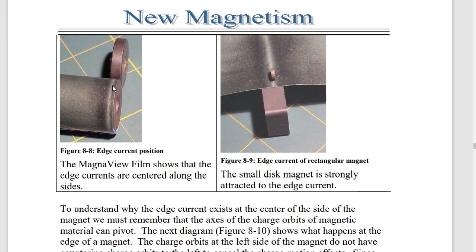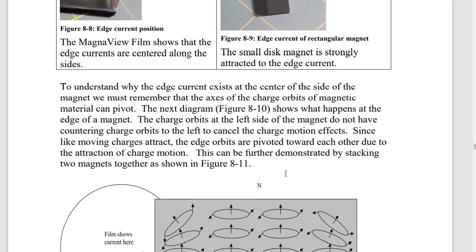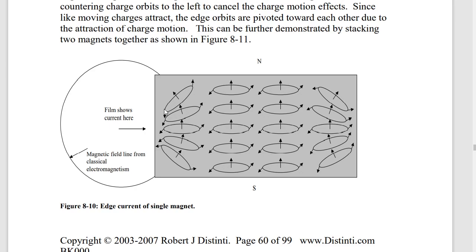If we put the MagnetView film along the side of the magnet, we see that the current ring is actually along the center of the magnet. Using a large rectangular magnet, we can see that the current ring goes around the center, and a little disc magnet is attracted right to that center current. If you model the current as halfway across the center of the magnet, you'll get very good results — you can compute the field from a rectangular magnet at a distance very accurately.